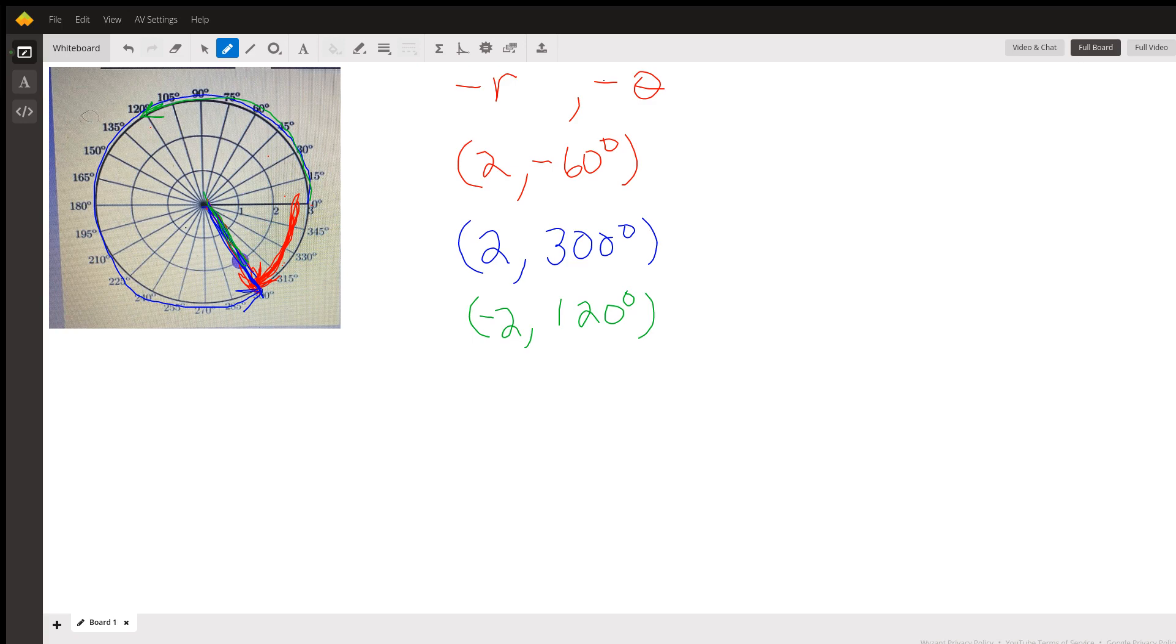One has a negative R. One has a negative theta. And if we want to make this in radians, you might have all these memorized. I do not. So I'm going to have to convert 60 times pi over 180. Well, I know what that is. That's pi over 3. So this is 2, negative pi over 3.